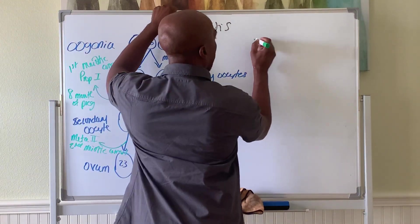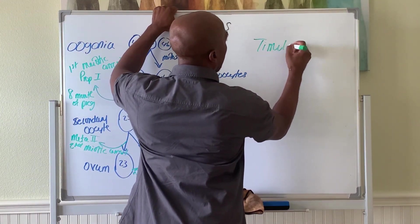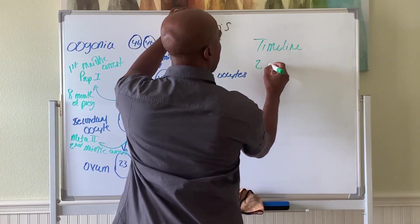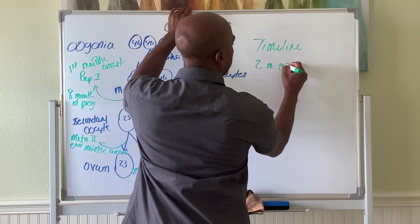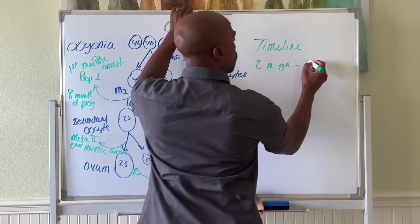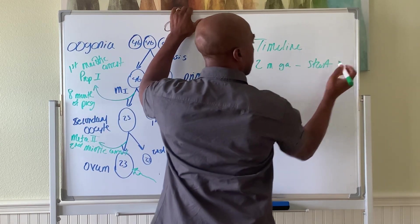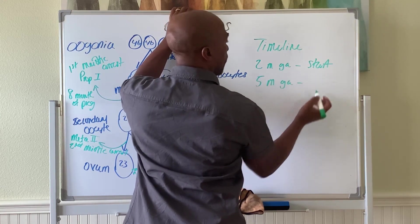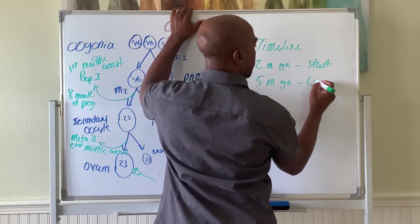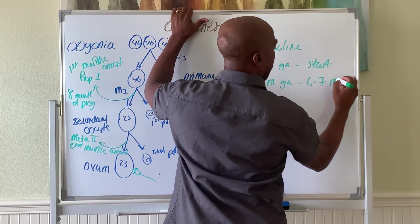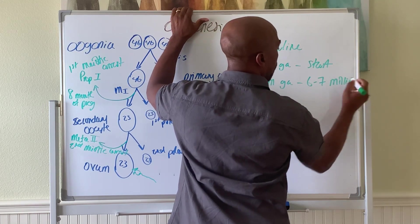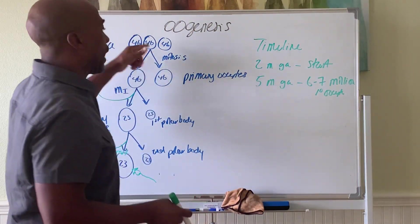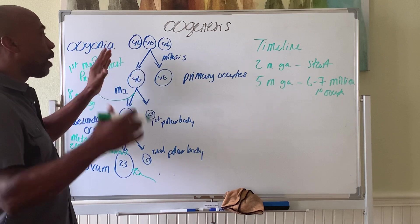So, the timeline here, you can begin with around two months of gestation. Here, you start the process. By about five months of pregnancy, you have around six to seven million primary oocytes have been formed by this point. Because they all undergo mitosis to double, double, double, double, double, double up.